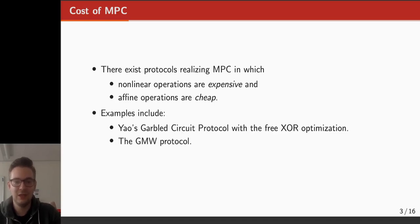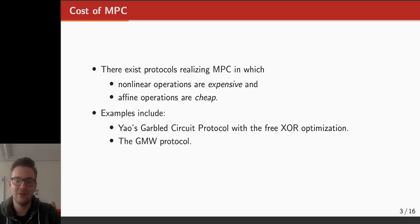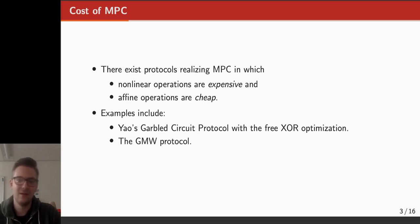Examples of such protocols include Yao's garbled circuit protocol with a free XOR optimization, where the function f is represented as a Boolean circuit comprised of a number of gates, and these gates are garbled. The garbling of an XOR gate is cheap because it involves some simple additions, whereas the garbling of an AND gate is expensive because it requires calls to symmetric primitives. There's also the GMW protocol, where small f is represented as a Boolean circuit and inputs are shared amongst the parties. Evaluation of an XOR gate involves local computation so it's cheap, whereas evaluation of an AND gate requires communication between the parties, so it's expensive.